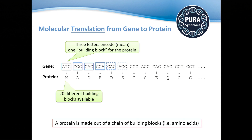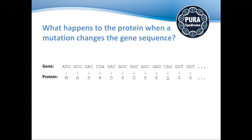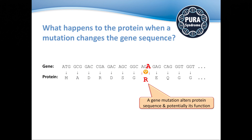The protein is actually a chain of these amino acid letters. Compared to the gene where we have only four possibilities — A, T, G, and C — we have 20 different letters on the protein side, so there is more variation. What happens if a mutation comes in? The gene is changed in one letter. For example, a C becomes an A, and the identity of the building block — the amino acid — changes: a serine would become an arginine. A gene mutation alters the protein sequence, and by doing so potentially also its function. That's the take-home message.